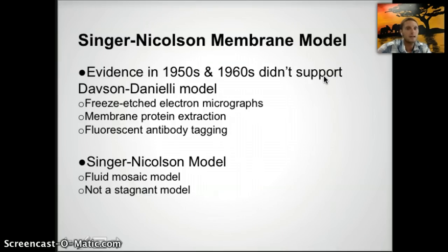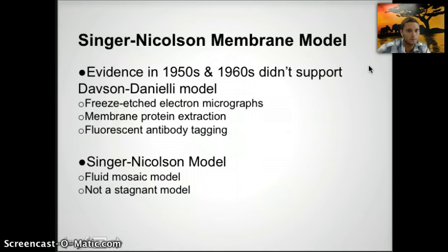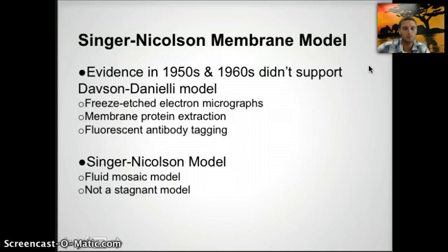As technology advanced in the 1950s and 60s, new evidence didn't support the Davson-Danielli model. Freeze-etched electron micrographs — freezing and fracturing cells — didn't support it. Proteins being extracted didn't show the continuous layers the model called for. Using fluorescent antibody tagging, proteins were tagged so they would glow, showing that membrane proteins are free to move and are more fluid. Through all three lines of evidence, the Davson-Danielli model had to be discarded.